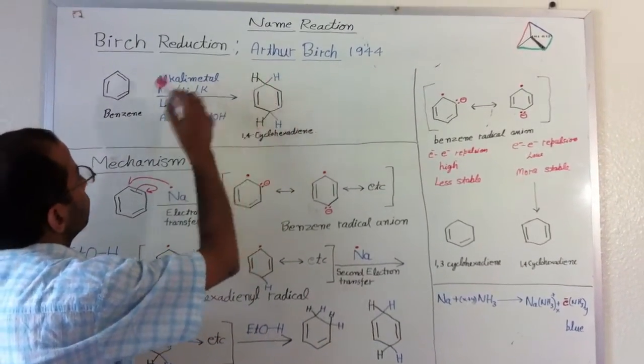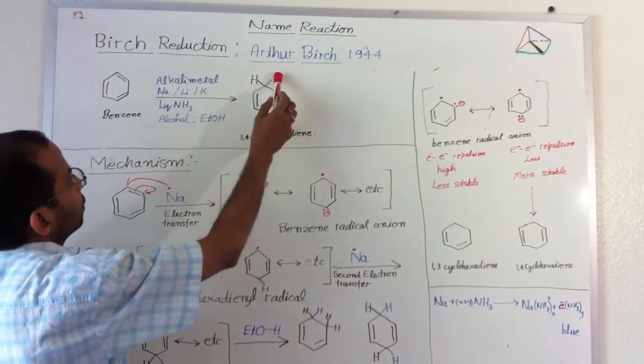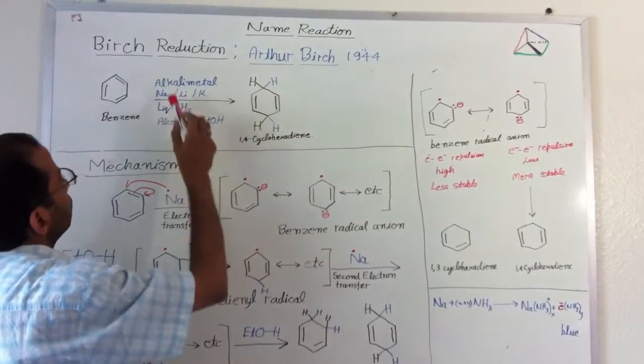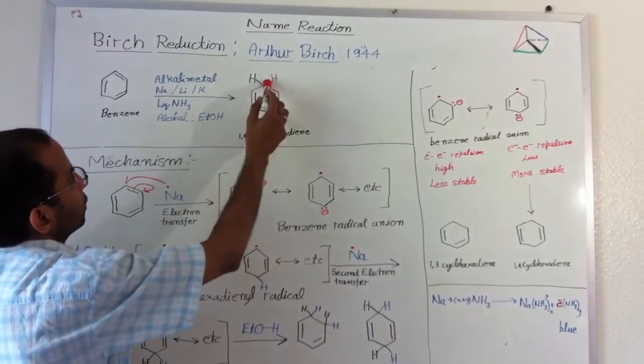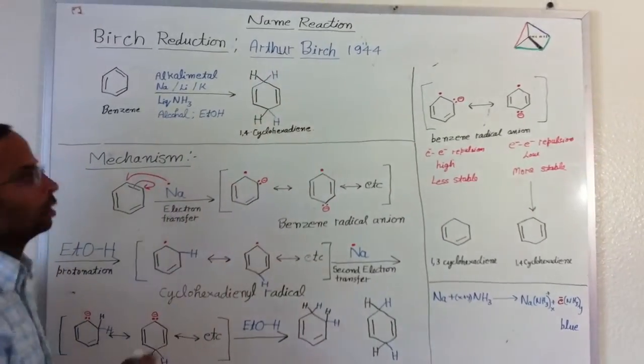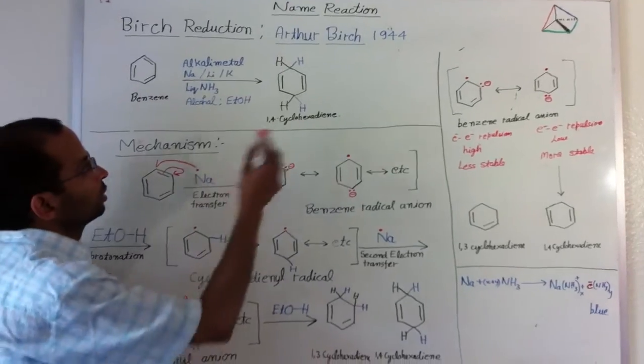This black hydrogen is already from benzene and this blue hydrogen, which I denoted, is coming from ethanol - that is additional. So benzene is converted into 1,4-cyclohexadiene through this reaction.